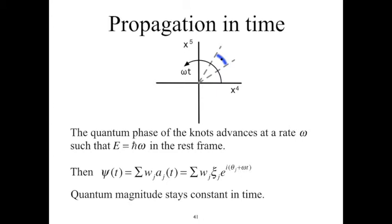The quantum phase of the knots advances at a rate ω, such that energy E equals ℏω in the rest frame. In the paper we show that energy is proportional to the rate ω, but establishing that the proportionality constant is equal to ℏ remains to be shown.